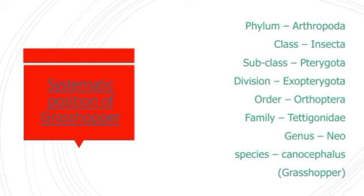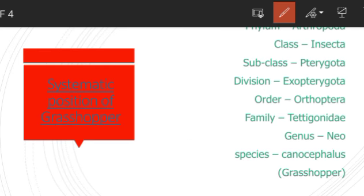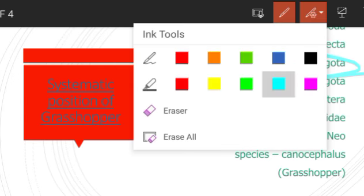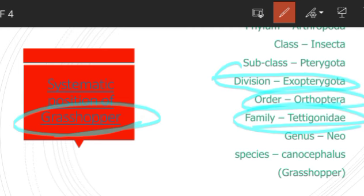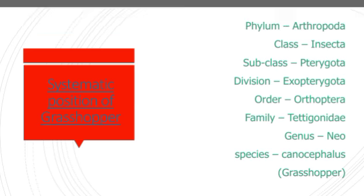Now let us look at an example belonging to order Orthoptera — the grasshopper, a common and well-known example. Its systematic position: Phylum Arthropoda, Class Insecta, Subclass Pterygota (because it bears wings), Division Exopterygota (because wings develop in normal environment, not in a cavity), Order Orthoptera, Family Acrididae, Genus Aiolopus, Species — the common horn grasshopper.